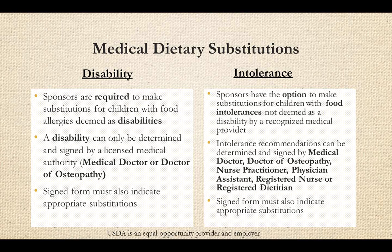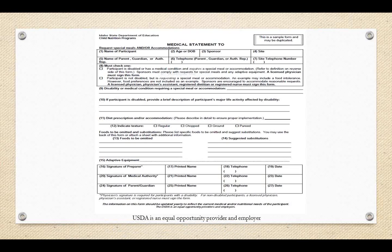An intolerance can be documented by a medical doctor, doctor of osteopathy, nurse practitioner, physician assistant, registered nurse, or registered dietitian. Idaho's recognized medical authorities — medical doctors and doctors of osteopathy — are the ones who can determine a disability. The state of Idaho child nutrition programs provide a standard medical statement form, available for download on the state agency website under the civil rights icon.